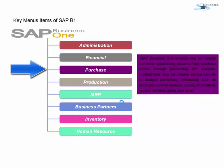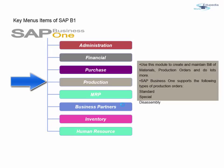SAP Business One has a Purchase module that enables you to manage the entire purchasing process — from placing a purchase order to receiving and invoicing those orders, and generating reports to analyze purchase volume, pricing information, and vendor liabilities such as aging. Aging defines which vendors have not yet been paid by the company and are due for payment.